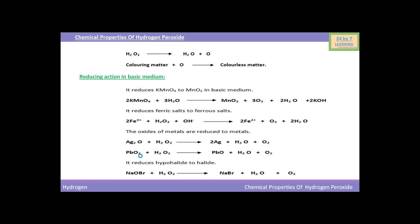Similarly, when lead oxide PbO₂ reacts with hydrogen peroxide H₂O₂, hydrogen peroxide reduces PbO₂ to PbO. It also reduces hypohalite to halide. You can see the reaction below: NaOBr (sodium hypobromite) reacted with H₂O₂ yields NaBr (sodium bromide). These are the reactions showing the reducing action of hydrogen peroxide in basic medium.